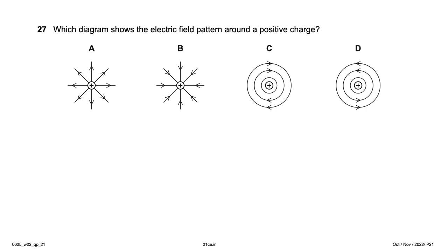Which diagram shows the electric field pattern around a positive charge? For a positive charge, field lines go outward radially. Options C and D show circular patterns — incorrect. Option B would represent a negative charge. Option A shows outward radial lines — the right answer.